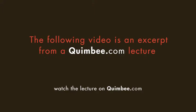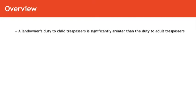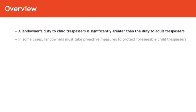Duties of landowners to child trespassers. By way of introduction, the landowner's duty to look out for the interests of child trespassers is significantly greater than it is concerning adult trespassers, especially undiscovered adult trespassers. Unlike with adults, in some cases the landowner must take some proactive measures to look out for the interests of undiscovered yet foreseeable child trespassers, unlike as is often the case with undiscovered adult trespassers.